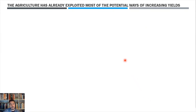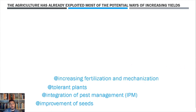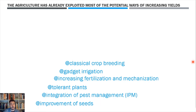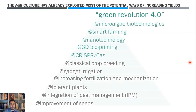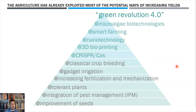The first, second, and third green revolutions have already fulfilled the capacities of contemporary agriculture crop yields during the last 80 years. Only Green Revolution 4.0, based on new technologies like CRISPR, 3D printing, nanotechnology, smart farming, and microalgae biotechnologies, can move the whole agricultural sector ahead again and increase crop yield.